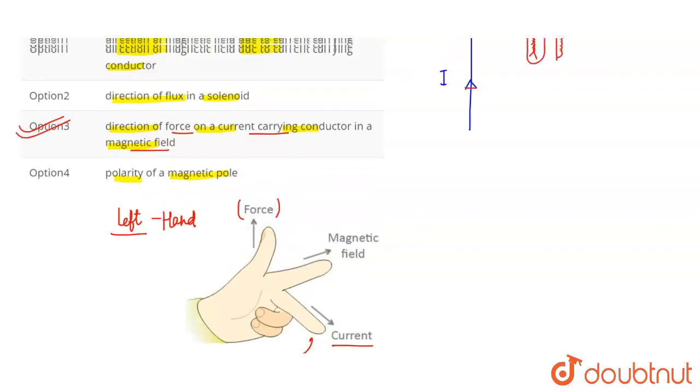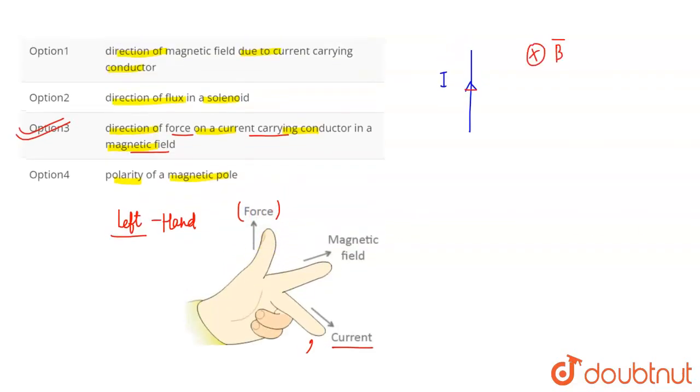The thumb is the direction of force. So let's take left hand. The middle finger is current, the direction of the wire or conductor. The forefinger is used to show the magnetic field.